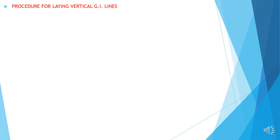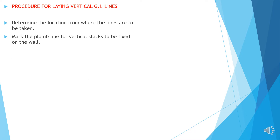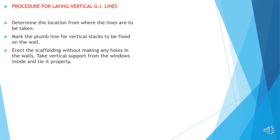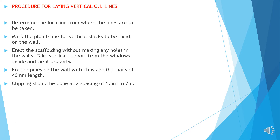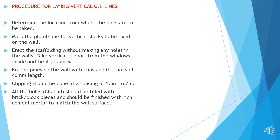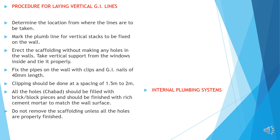Procedure for laying vertical GI lines. Determine the location from where the lines are to be taken. Make the plumb line for vertical stakes to be fixed on the wall. Erect the scaffolding without making any holes in the walls. Take a vertical support from the windows inside and tie it properly. Fix the pipes on the wall with clips and GI nails of 40 mm length. Clipping should be done at a spacing of 1.5 to 2 meters. All the holes should be filled with brick block pieces and finished with rich cement mortar.